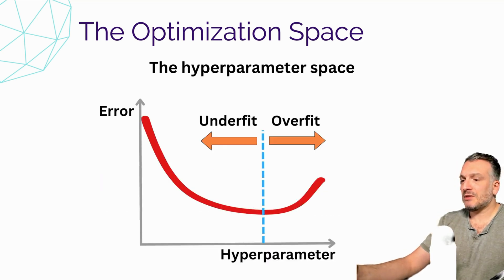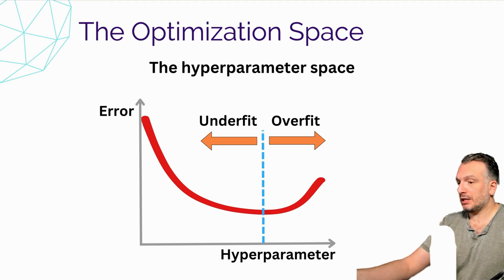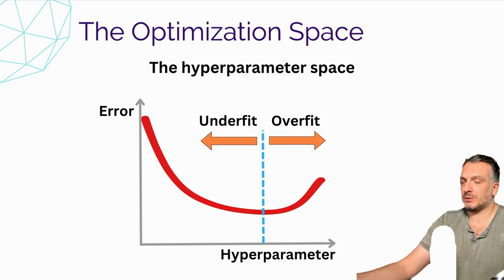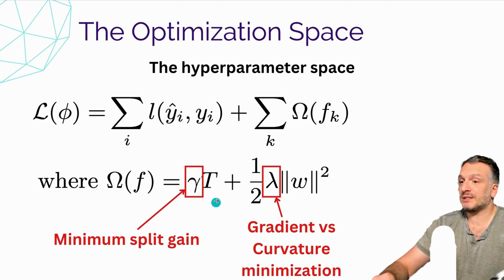We can consider the axis of the hyperparameter space. Those are the model parameters that we cannot optimize using statistical learning, but are choices we need to make when training a model. Typically, we are trying to find the optimal hyperparameters by minimizing underfitting and overfitting — finding the sweet spot where the model does neither. For example, in XGBoost, gamma was a hyperparameter that controlled the number of leaves in the trees, and lambda controlled how much gradient versus curvature we were minimizing.